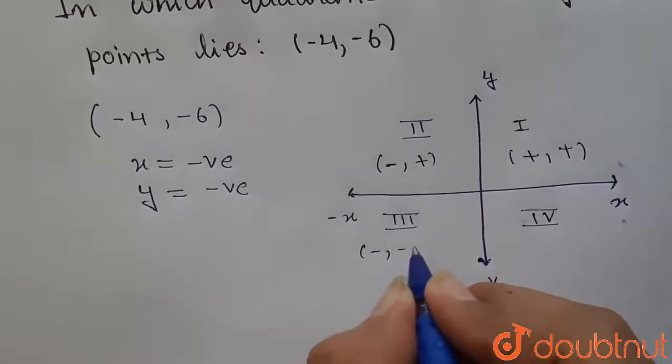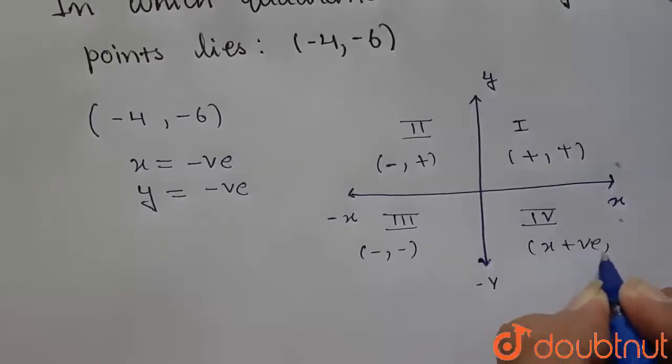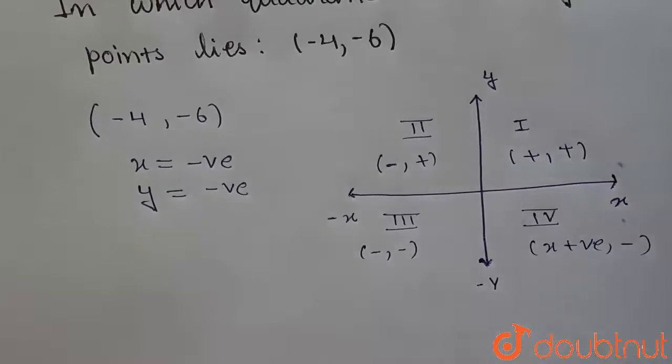So x also negative and y also negative. And in the fourth quadrant, we are having x positive and y we are having here negative.